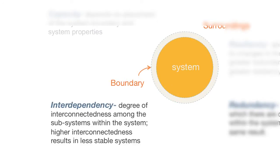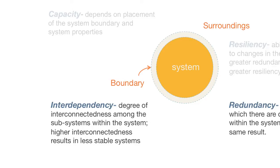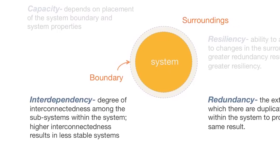Interdependency indicates the degree of interconnectedness among the subsystems within the system. A spider's web is often a highly interconnected system. If you tug on one part of the web, the tug will be felt throughout the system.